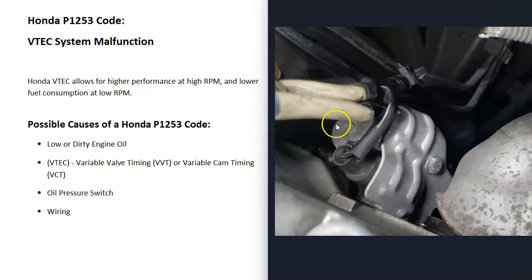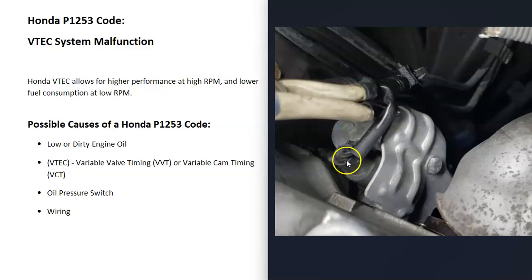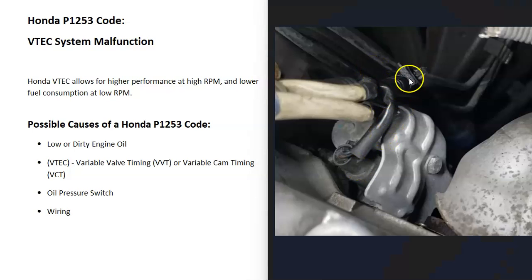For example, right here in this example, up against the firewall, here's the VTEC. In this particular Honda, this oil pressure switch went bad and just needed to be swapped out and replaced. Keep in mind that anything wrong with the wiring going to the oil pressure switch — if it gets damaged or if there's an open or short — can cause the same problems as a bad switch.